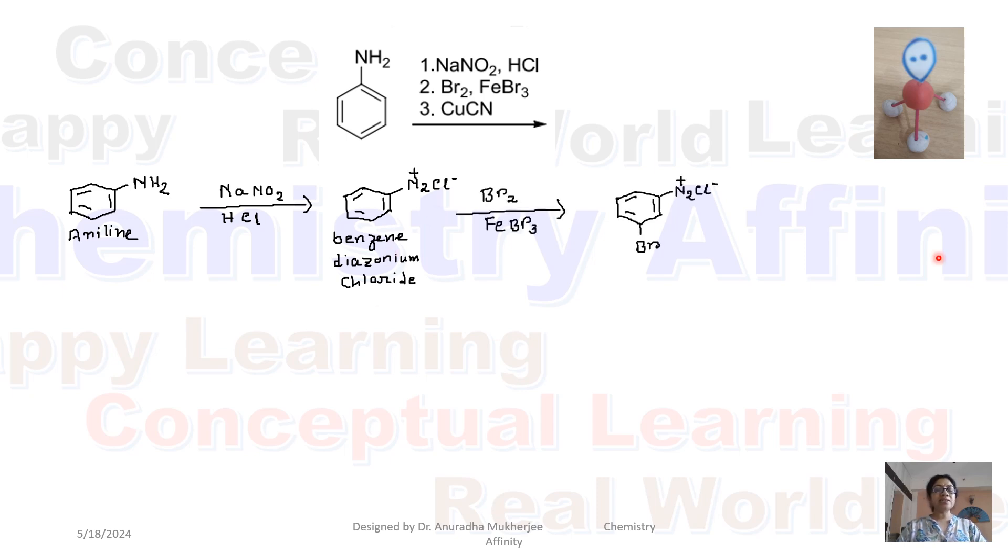Next reactant is bromine ferric bromide. So this is an example of electrophilic aromatic substitution reaction. Since it is N2 plus, it deactivates the ring. So that's why it is a meta director. So electrophile Br plus attacks meta position with respect to N2 plus Cl minus.